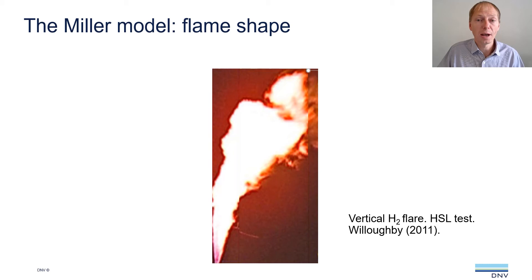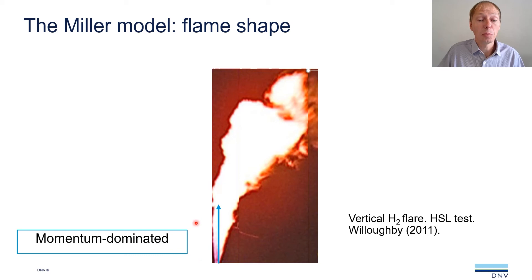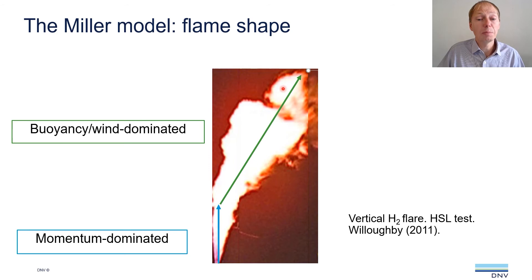For a vertical jet fire, the Miller model principles for flame shape are very similar to those for the horizontal case. This picture is taken from the Willoughby paper from 2011, from an HSL test of a vertical hydrogen jet fire. The Miller model again has a momentum-dominated part of the flame — the vertical part indicated by the blue arrow — and then, further from the release point, the impact of wind becomes important, so the flame tilts and we have the buoyancy/wind-dominated part of the flame shape.